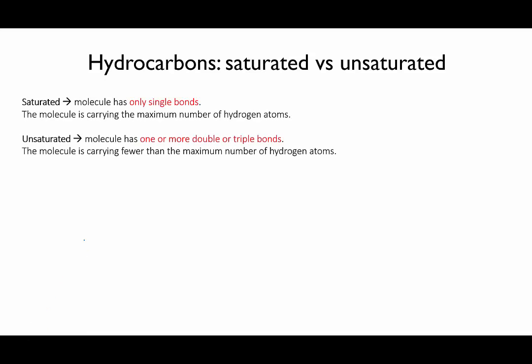A saturated molecule is one that has only single bonds, while an unsaturated molecule has one or more multiple bonds, double or triple.